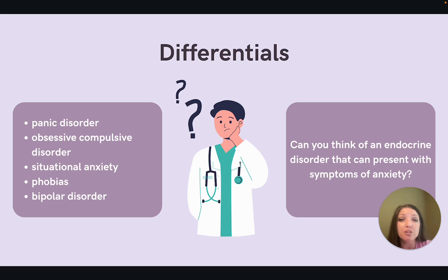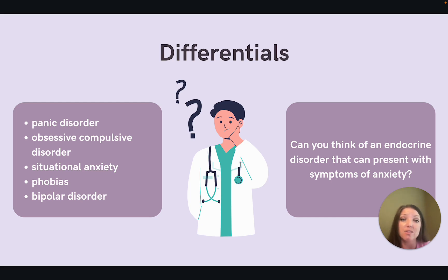What are some of the differentials we should consider with symptoms of generalized anxiety disorder? We would want to think about panic disorder if our patient tells us about times of intense anxiety with super fast onset. Or when a particular worry is associated with a compulsion, we would want to consider obsessive compulsive disorder as a differential as well. Other differentials might include situational anxiety, specific phobias, and bipolar disorder. An endocrine condition that can present with symptoms of anxiety is hyperthyroidism.